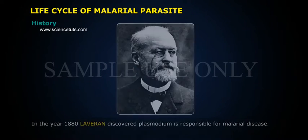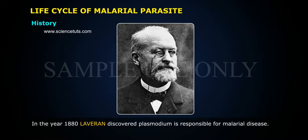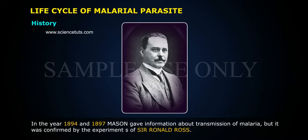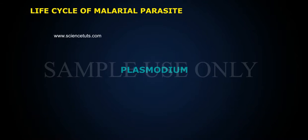History: In the year 1880, Leveron discovered Plasmodium is responsible for malarial disease. In the year 1894 and 1897, Mason gave information about the transmission of malaria, but it was confirmed by the experiments of Sir Ronald Ross.